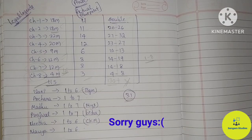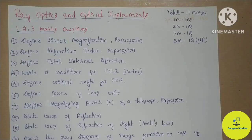No problem. The main important questions — these questions are 100% diamond questions. I will tell you the questions are perfect. Today we will discuss important questions in this chapter. If you have a requested video, please comment. If you have a Ray Optics and Optical Instruments chapter question, I will tell you.